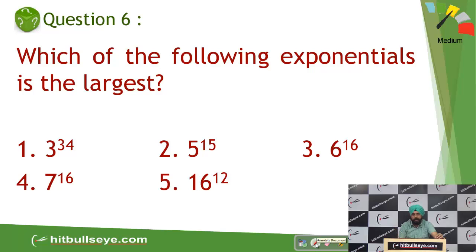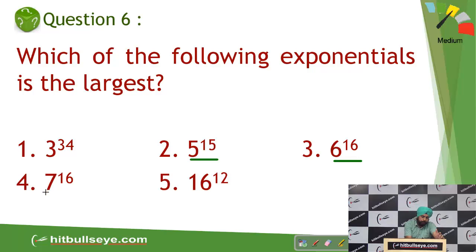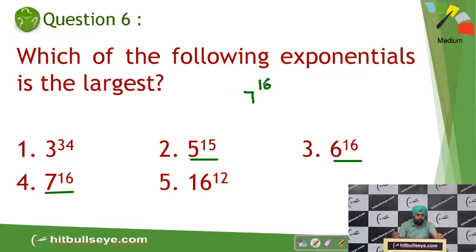Let's compare the options. 6 raised to power 16 will be greater than 5 raised to power 15 because the base and power are both higher. Similarly, 7 raised to power 16 will be greater than 6 raised to power 16. So within these three options, the highest is 7 raised to power 16. Now if you take 3 raised to power 34...